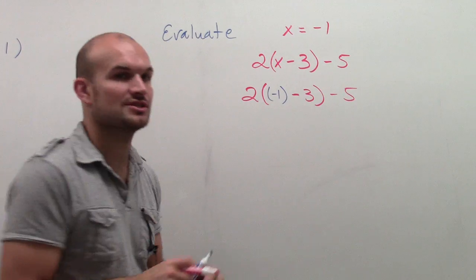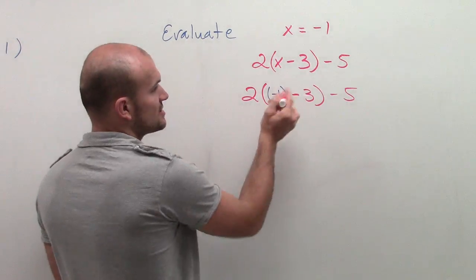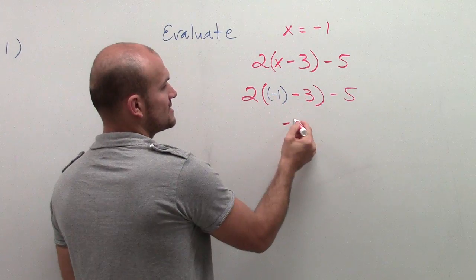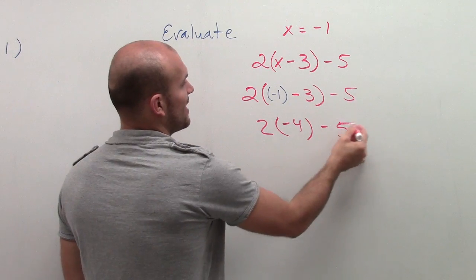So now I use the order of operations. By following my order of operations, I need to simplify what's in the parentheses first. Negative 1 minus 3 is negative 4 times 2 minus 5.